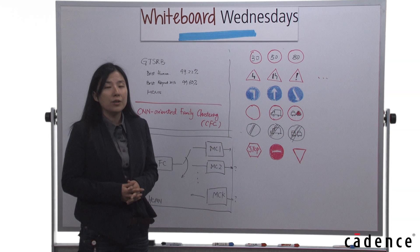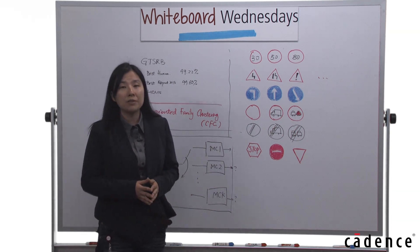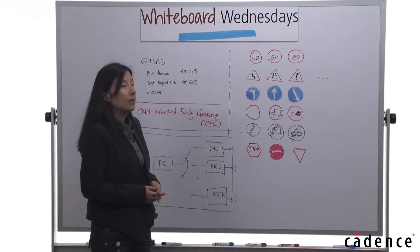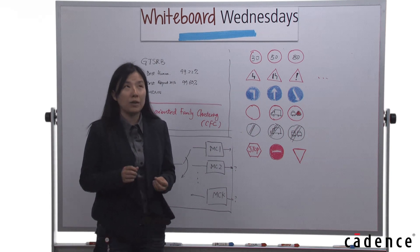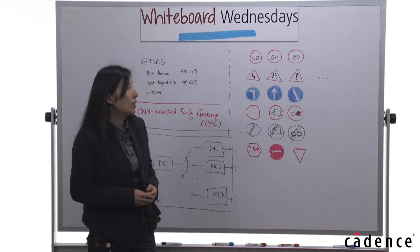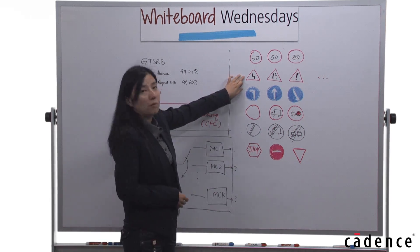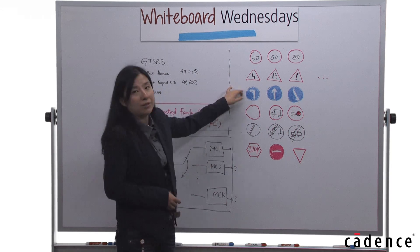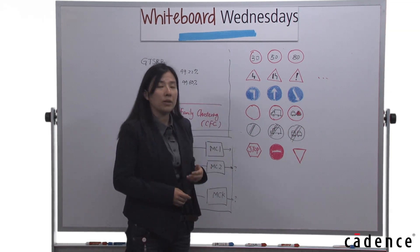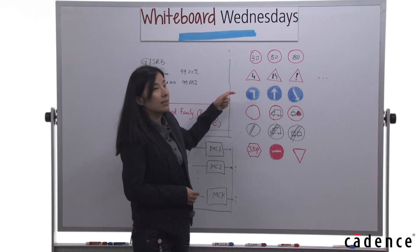How do we do that? Among all 43 signs, we pick the two that are least similar to each other—let's say the curve road ahead and the left turn arrow. These are what we call the seeds: seed A and seed B.